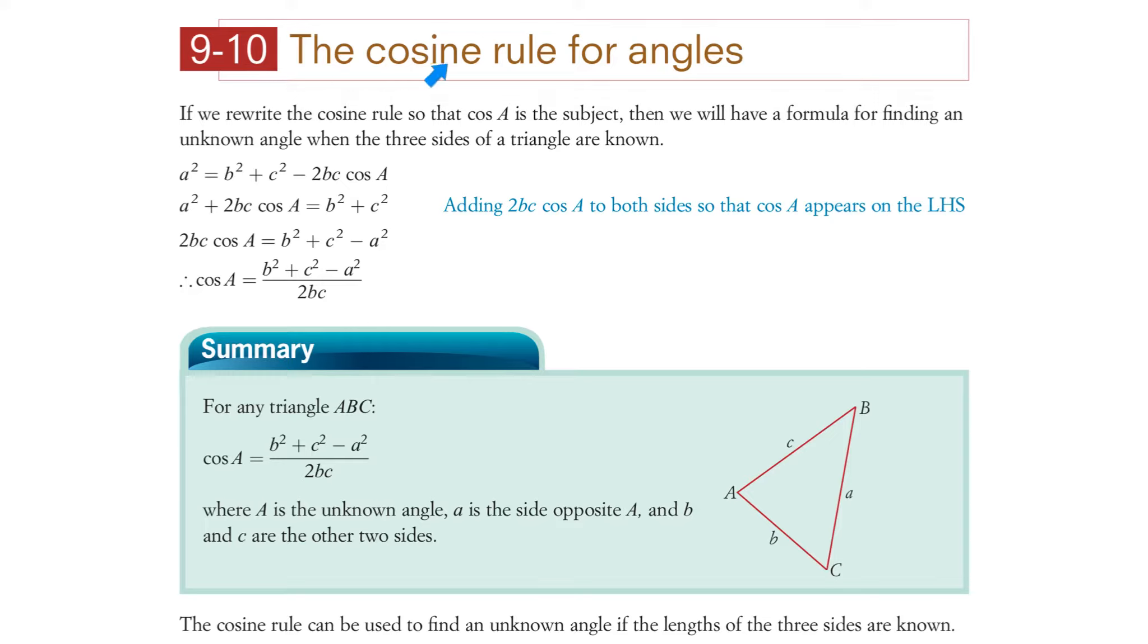Chapter 9, section 9-10, the cosine rule for angles. If we rewrite the cosine rule so that cosine A is the subject, then we will have a formula for finding an unknown angle when the three sides of a triangle are known.